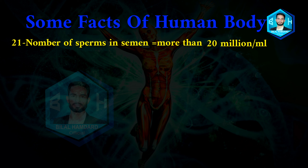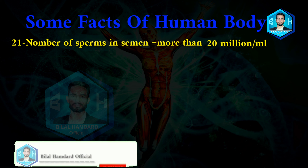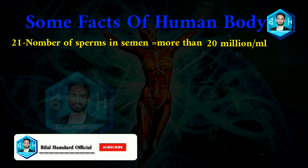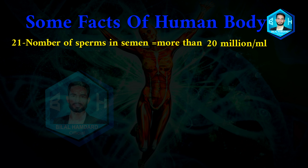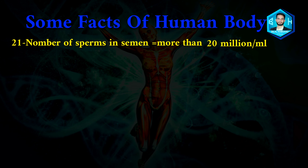Number twenty-one: number of sperms in semen is more than 20 million per milliliter. In the male body, in one milliliter of semen there are more than 20 million sperms.